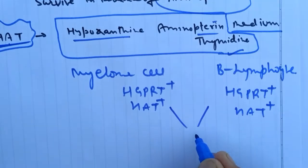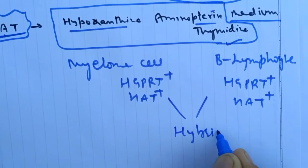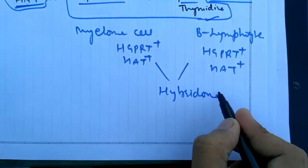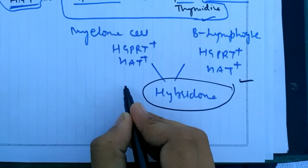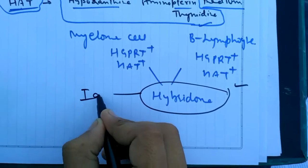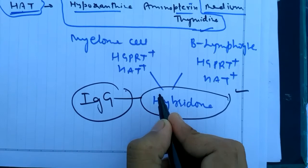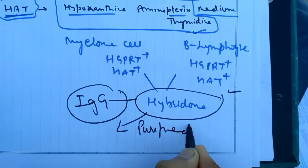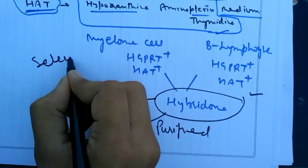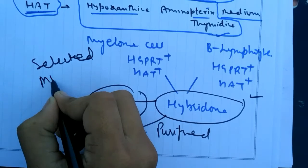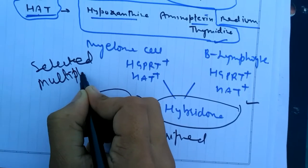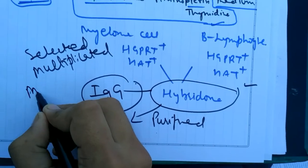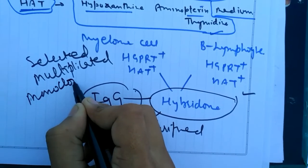But when we fuse, the hybridoma cell can survive in this condition and it will produce only one type of IgG. This cell line will be verified and will be selected and will be multiplied. Hence we can produce desired amount of monoclonal antibodies.